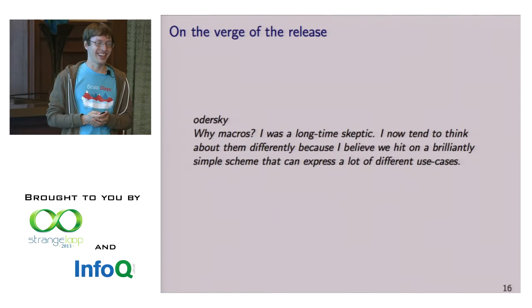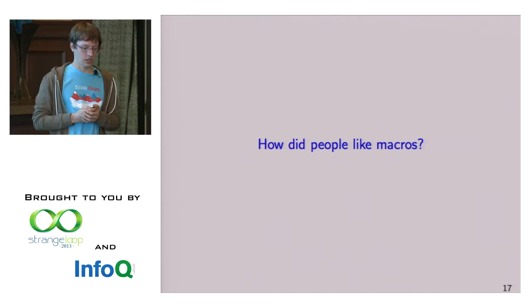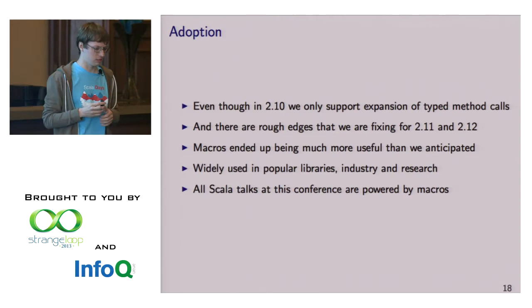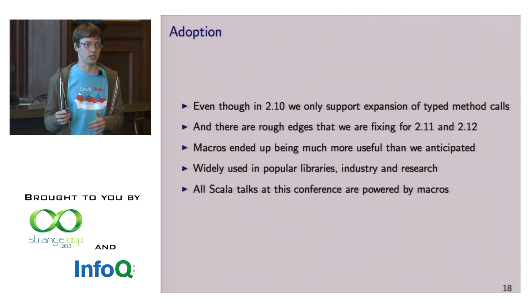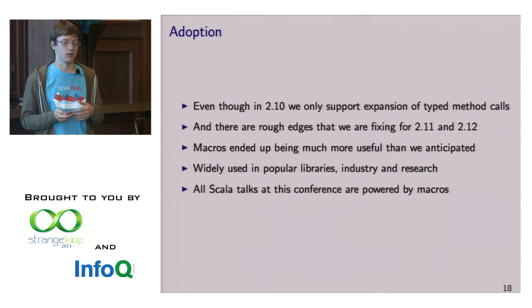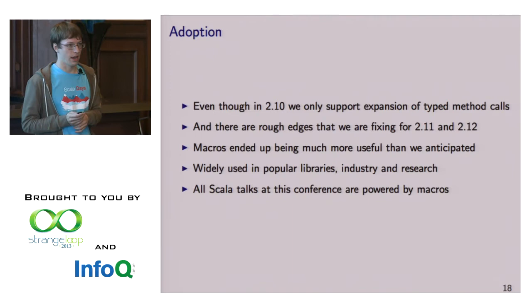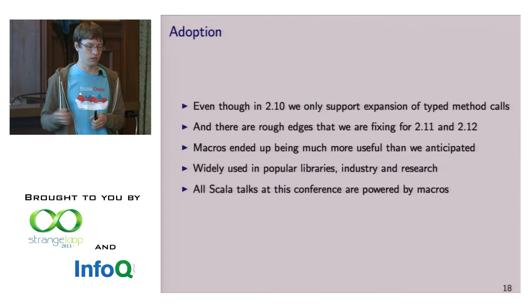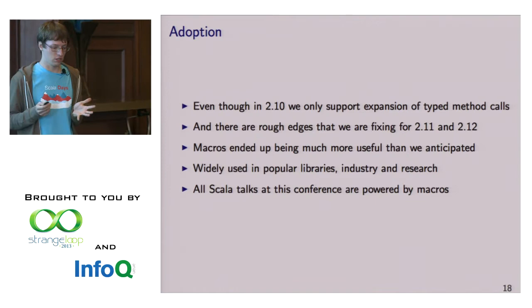What happened after we released macros in Scala 2.10? How did people like it? Even though there were some problems we're currently fixing, all in all it was much more popular than we could even imagine. A lot of innovation in Scala today is driven by macros. Actually all the Scala talks at this conference are powered by macros to some extent — the async talk is based on async and await macros, and the talk about pickles and spores is also based on macros. It's just a small language feature that only expands method applications, and yet it has this interesting effect.